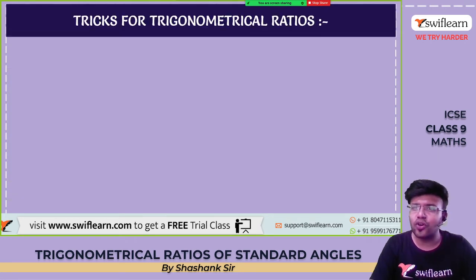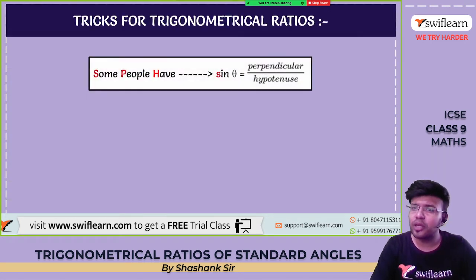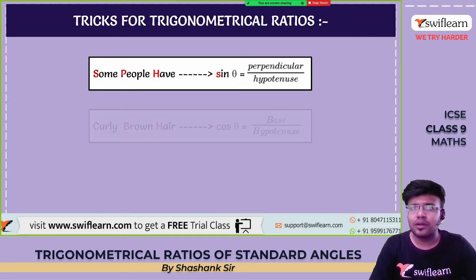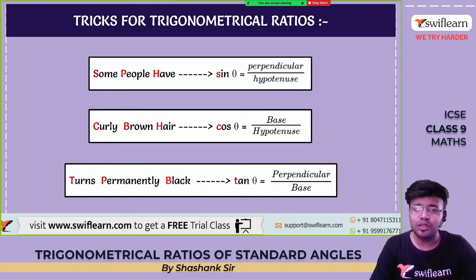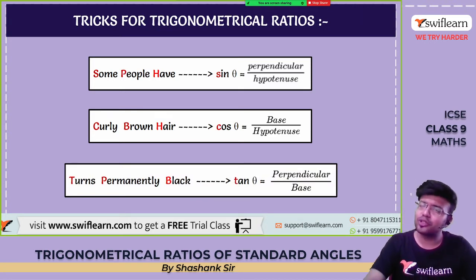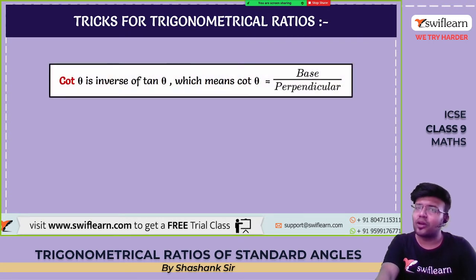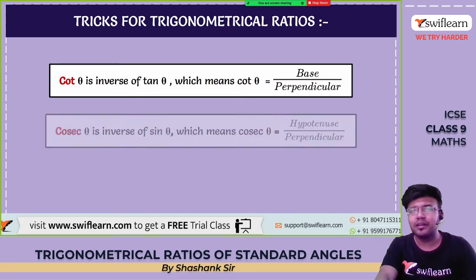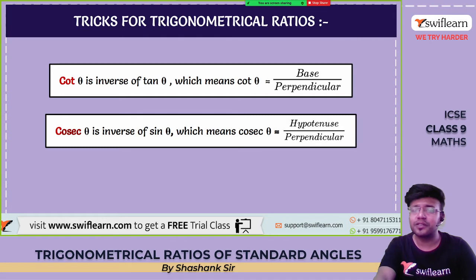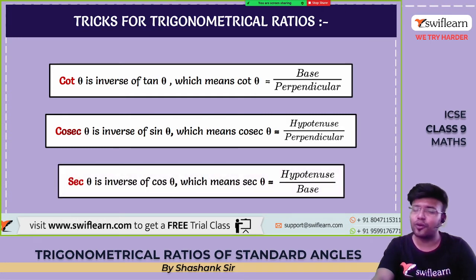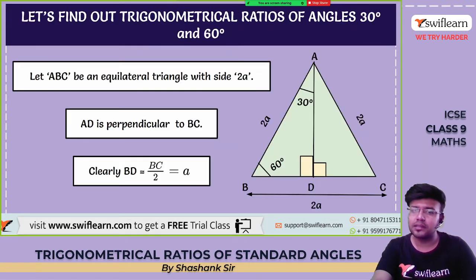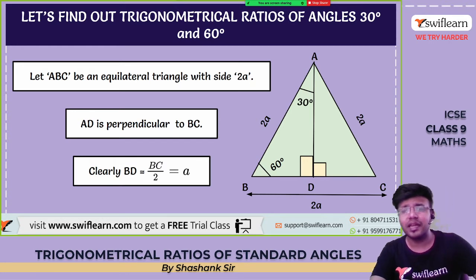A trick to remember trigonometrical ratios: 'Some People Have Curly Brown Hair Turned Permanently Black.' Sine is perpendicular by hypotenuse, cos is base by hypotenuse, tan is perpendicular by base, cot is base by perpendicular, cosec theta is hypotenuse by perpendicular, and sec is hypotenuse by base.